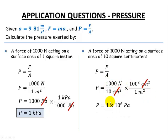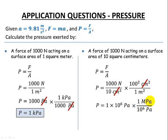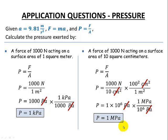When we perform the calculation, we get 1×10⁶ pascals. This is a large number, so we'll convert to megapascals. From the metric prefix tables, there are 10⁶ — or one million — pascals in one megapascal. The pascals cancel out, and our answer is one megapascal.